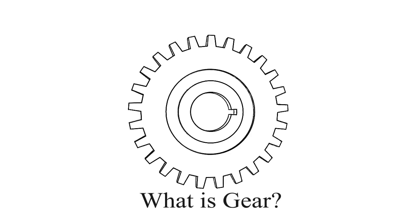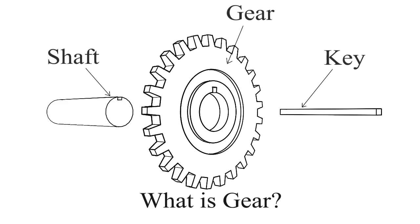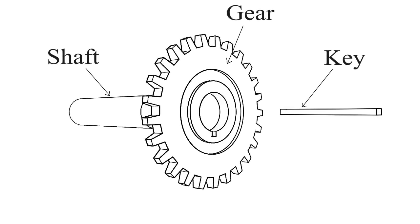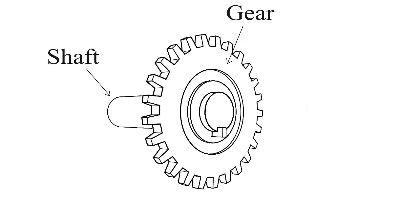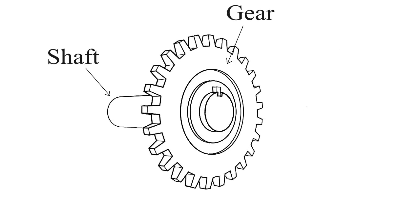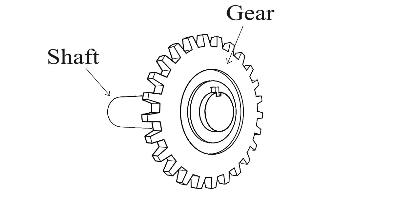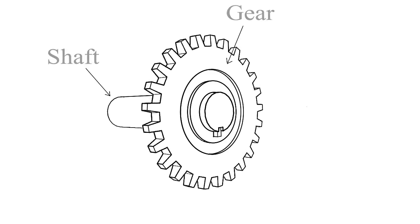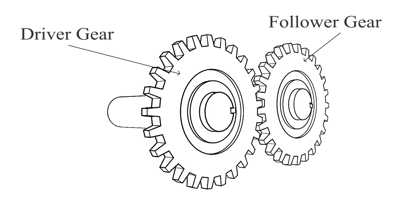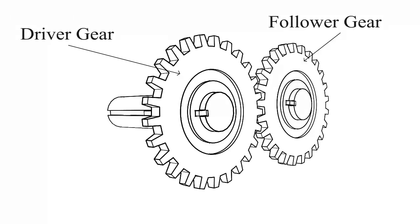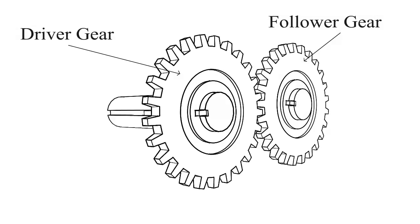What is gear? Toothed wheels are known as gears, which are matched together and transfer the motion between two shafts, in which one is a driver gear and the other one is a follower gear.